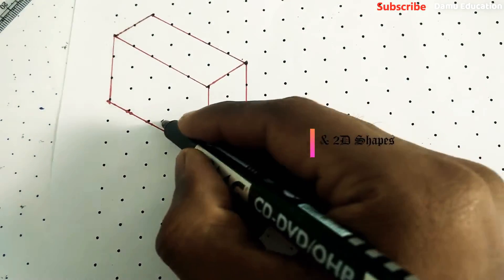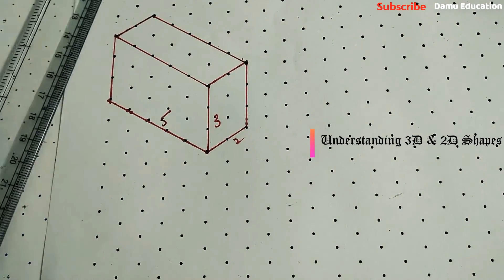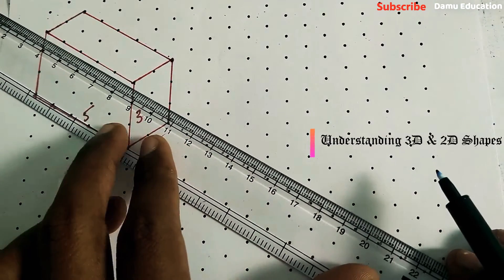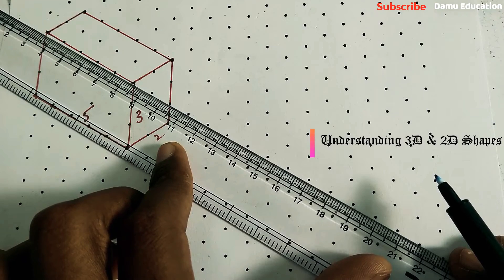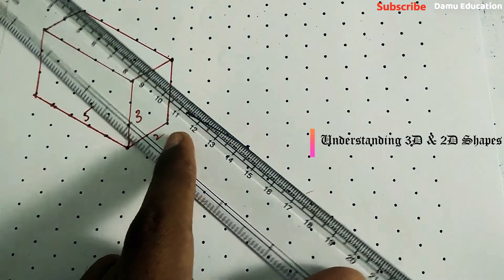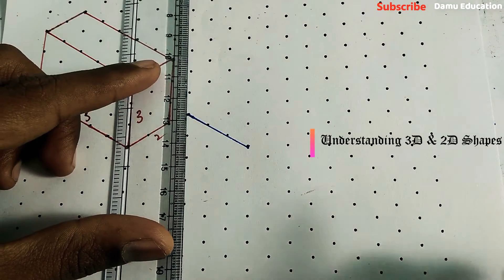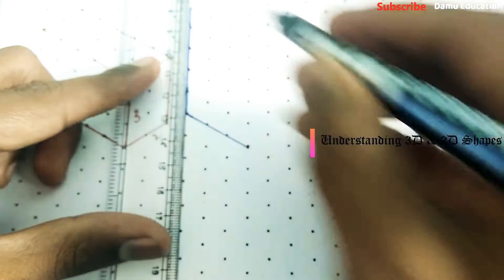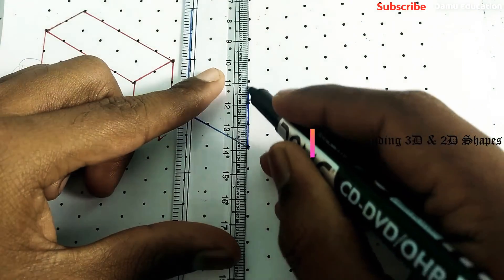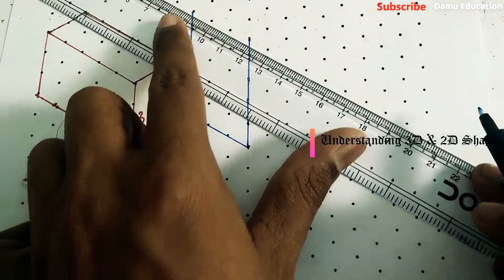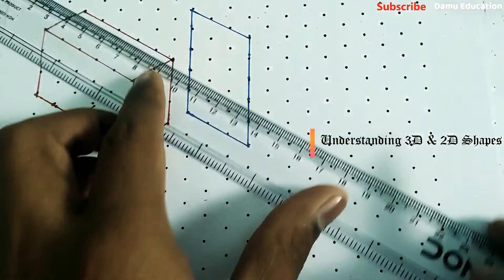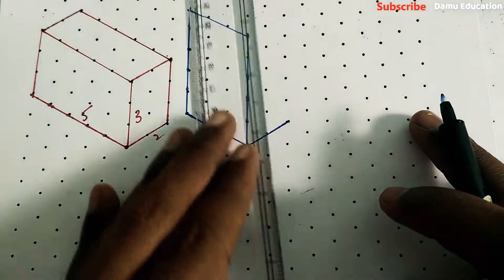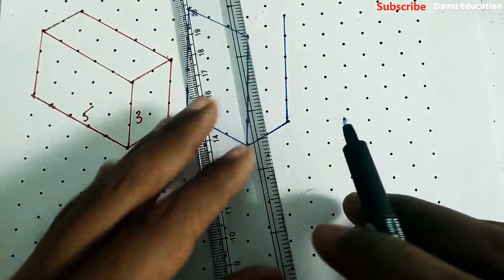Now let's take another option. Here width will be three and height may be five. One, two, three, four, five — and this side also five. We took width as three and depth as two. So again five, three, two — it comes like this.